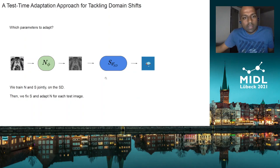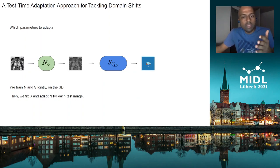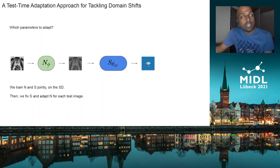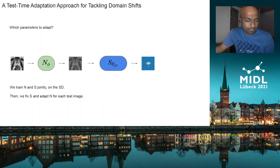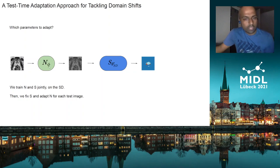We introduce a small normalization network M consisting of about three convolutional layers with relatively small kernel sizes. The idea is to make this the adaptive model. Keeping this network small enables it to model only contrast changes without introducing substantial structural changes in the image. We train M and F jointly on the source domain, and when we go to the target domain, we fix F and adapt the parameters of M for each test volumetric image.